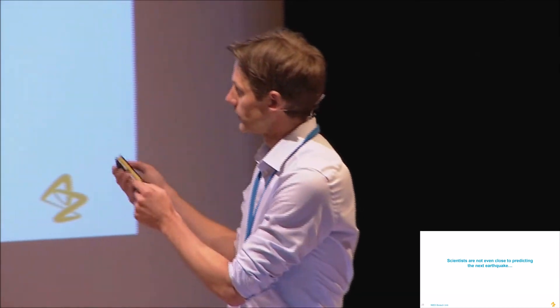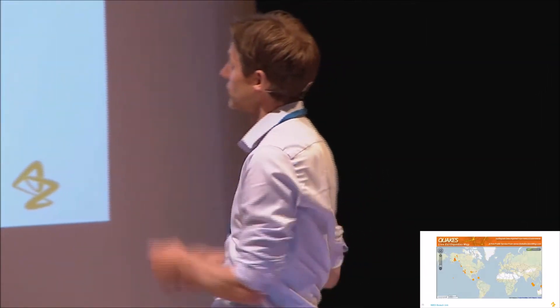But if we look at the map, then we can see that some parts of the globe are more prone to earthquakes than other. Cambridge, Gothenburg, not so much. California, perhaps.